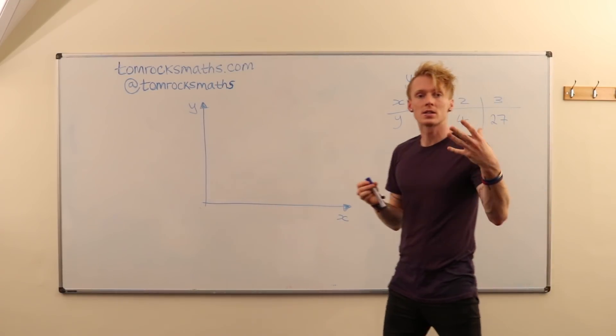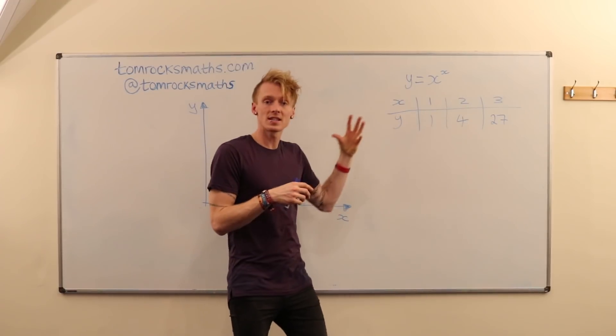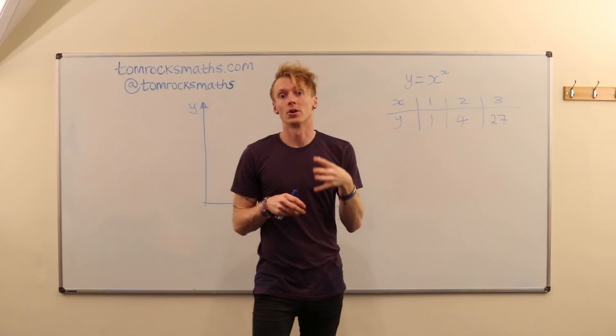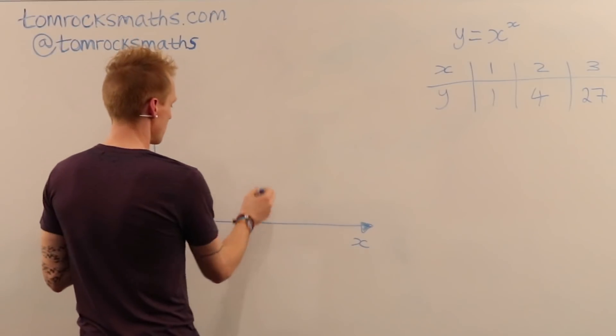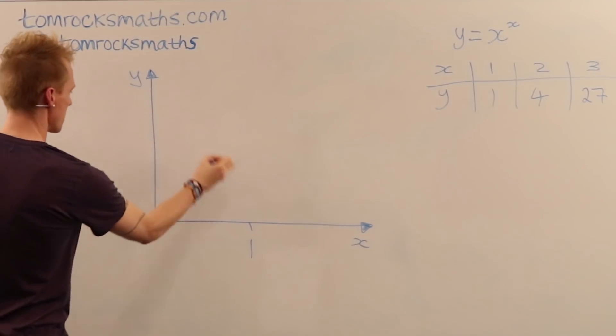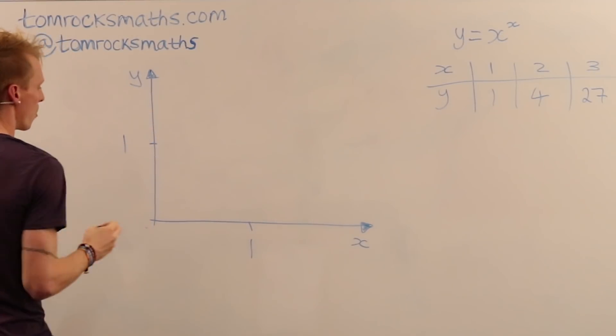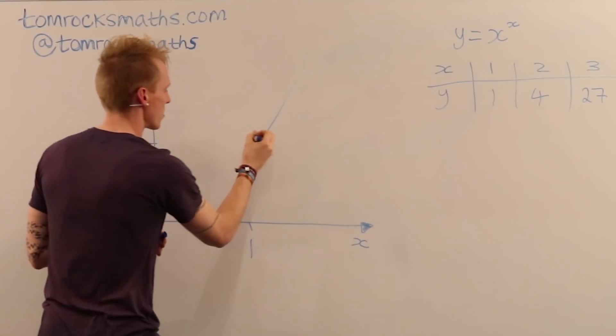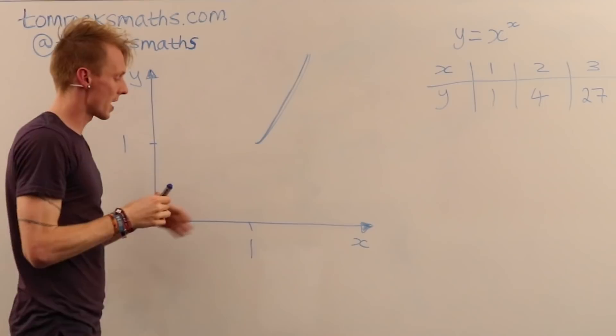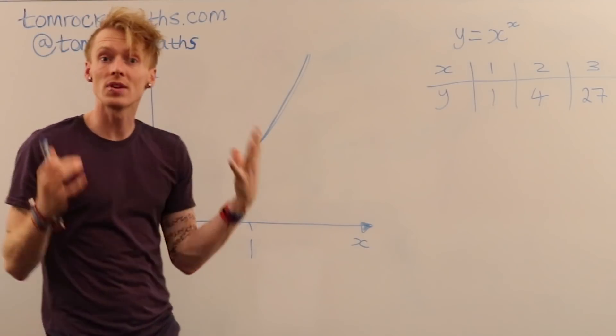So already we can start to see here that this function, this graph, is going to increase very quickly beyond 1. So if we consider this to be the point 1 and then this to also be the point 1, then from here onwards we're just very quickly increasing towards very large values of y as x only slightly increases.